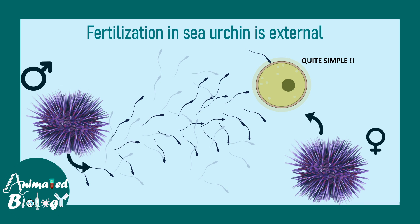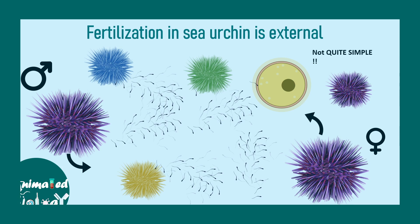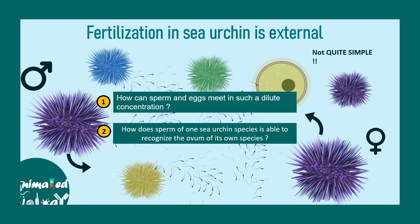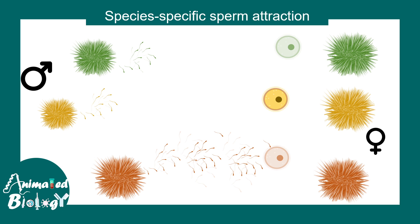It's actually not that simple. At any given time, one species of sea urchin is not the only one in that habitat — there are many more species present. The key questions are: how can sperm and egg meet in such a diluted concentration in seawater? And how does the sperm of one sea urchin species recognize the ovum of the same species, preventing cross-fertilization between different species?